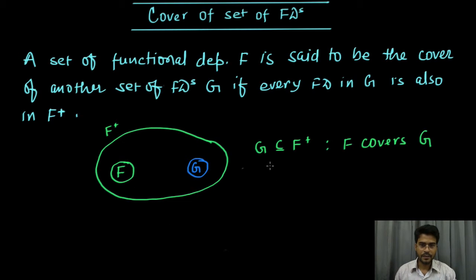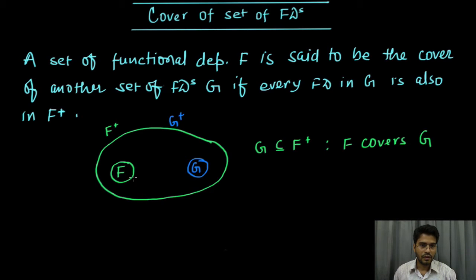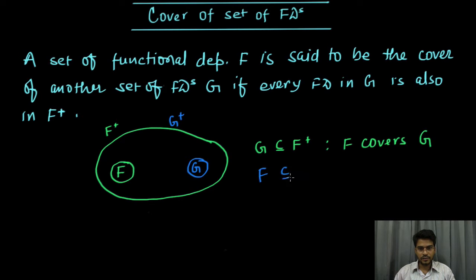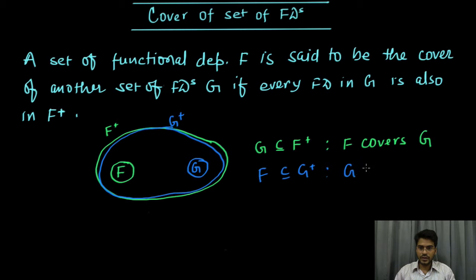Similarly, if we have the situation the other way around — this is g plus — and g plus is covering f, that is all the functional dependencies which are there in f are also there in g plus, then f is a subset of g plus. This means g covers f.